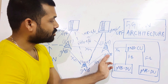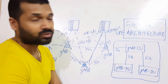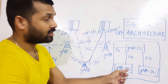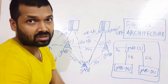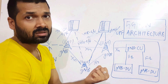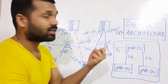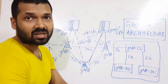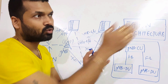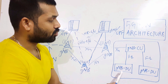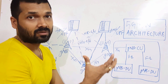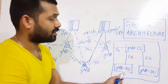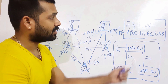Inside gNodeB we have two units: gNodeB-CU (Central Unit) and gNodeB-DU (Distributed Unit). The CU is essentially the controller — sometimes called the cloud RAN controller — centrally located in a data center from which all distributed units are connected. The DU contains three protocol layers: RLC, MAC, and the Physical Layer, which are terminated at the DU.